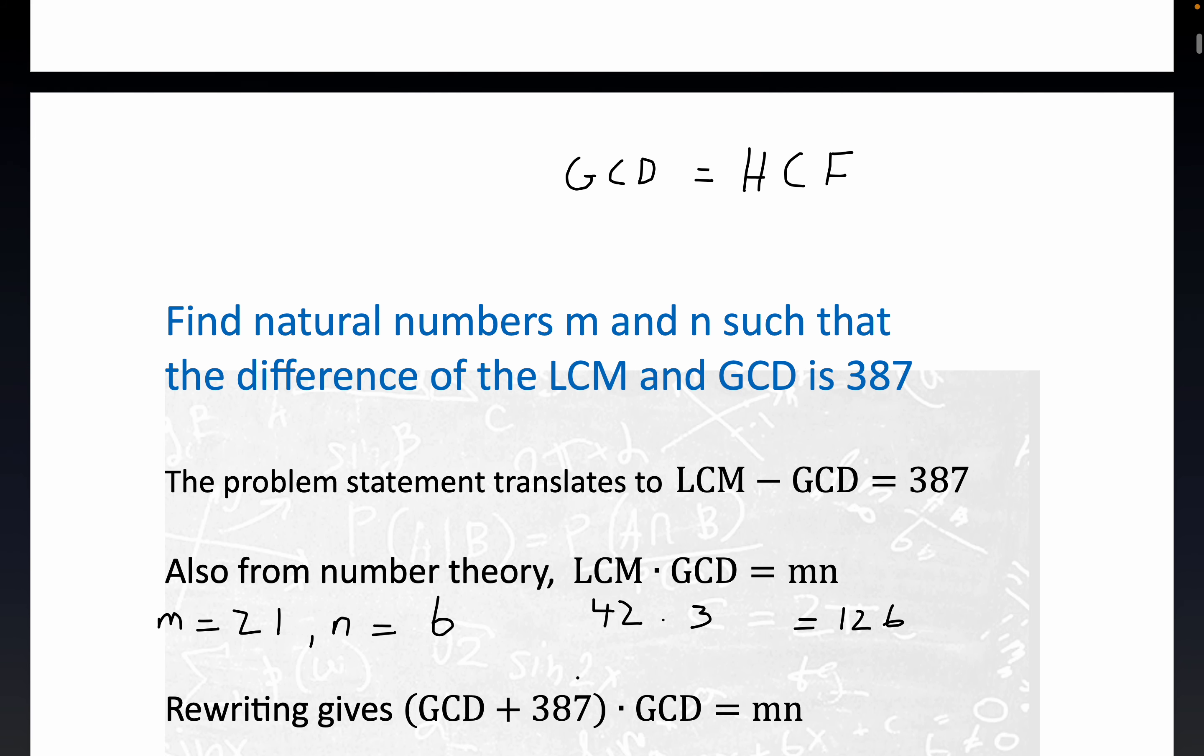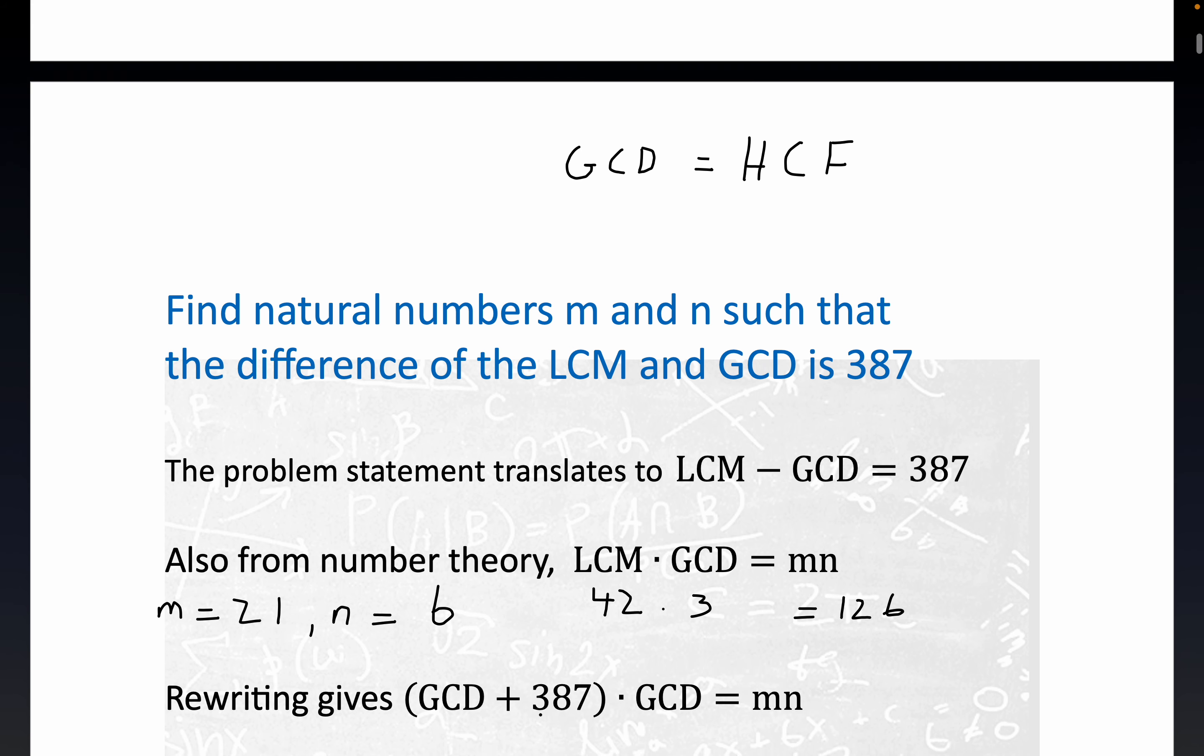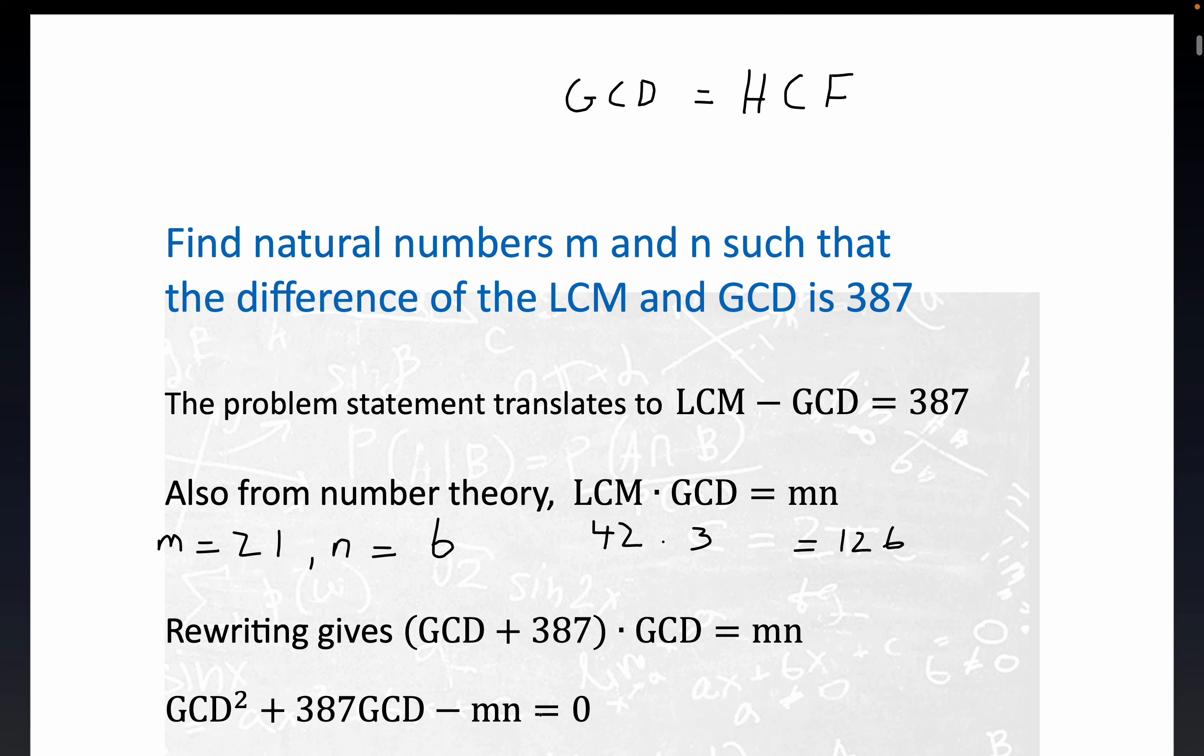We're going to rewrite this statement as GCD plus 387 times GCD equals mn. You can see the LCM is the GCD plus 387. So we just did a substitution and notice we do get a quadratic. I'm not going to rename the variable, we can have a three-letter variable for our quadratic. So GCD squared plus 387 GCD minus mn equals zero. This is certainly in quadratic form in the variable GCD.